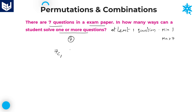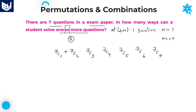If we solve two questions out of seven, 7C2. If we solve three out of seven, 7C3. Four out of seven, 7C4. Five out of seven, 7C5. Six out of seven, 7C6. And there is also a chance of solving all seven questions, that is 7C7. Since the question says one or more — meaning minimum one, maximum seven — you need to add all the values. If there is an AND condition you multiply; if there is an OR condition you add. So the required answer is 7C1 + 7C2 + 7C3 + 7C4 + 7C5 + 7C6 + 7C7.